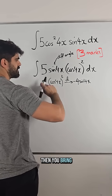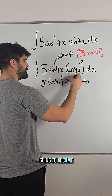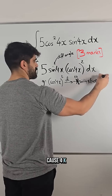Then you bring down the power, knock one off the power. When you bring down the 3, that 4 is going to become 12. And then you knock one off the power, so we have cos4x squared.